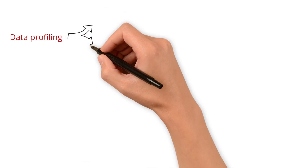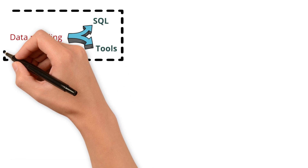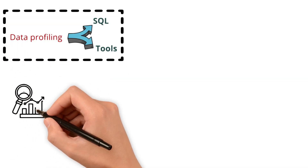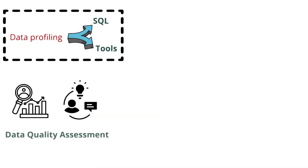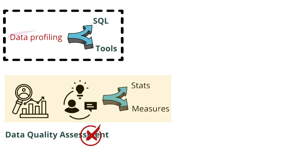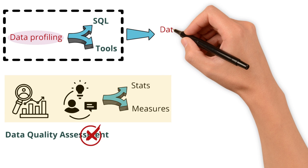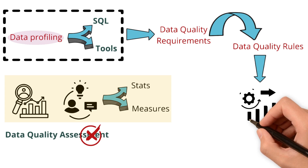Data profiling can be done manually with SQL queries or by using data profiling tools. When we first connect a profiling tool to our data, it gives us useful insights that might look like a data quality assessment because we get stats and measurements. But at this stage, it's not yet a full data quality assessment. The initial profiling helps us gather data quality requirements. The actual assessment comes later when we turn these requirements into data quality rules, which give us more complete and actionable insights.